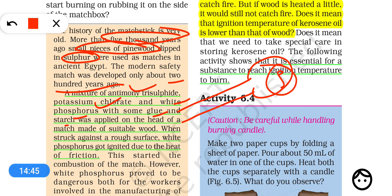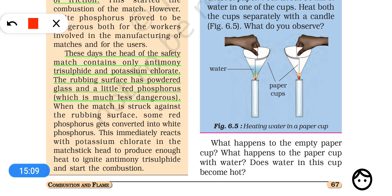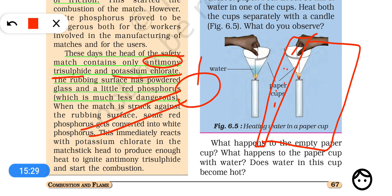There are five things in total. Later, it was found that phosphorus was very harmful to the people using matchsticks, so the composition was gradually changed. Nowadays, the matchstick head contains two things: antimony trisulfide and potassium chlorate. The side of the matchbox contains powdered glass and red phosphorus.